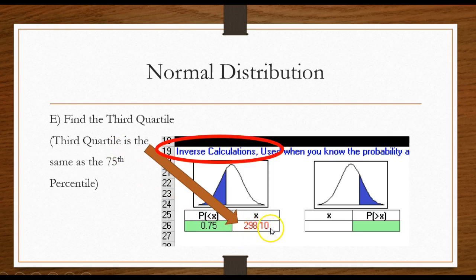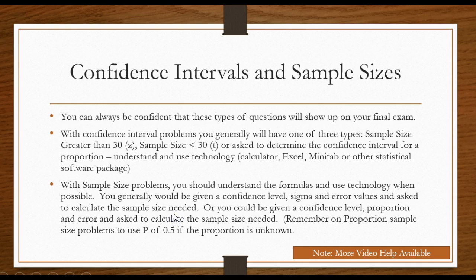If they asked me for the first quartile I would have put in 0.25. Easy enough. Confidence intervals and sample sizes, I think I'm going to continue this on the next video.